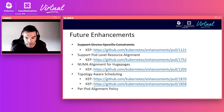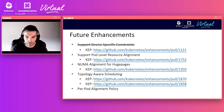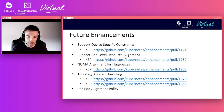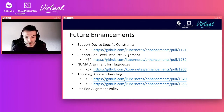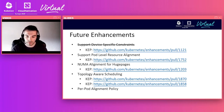NUMA alignment for huge pages: a proposed new component called the Memory Manager would provide hints and NUMA alignment for memory and huge pages, with a KEP currently under review. Topology-aware scheduling has also seen extensive discussion — should the scheduler be NUMA-aware, and should this be an in-tree or out-of-tree solution? There is ongoing work across Red Hat, Intel, Samsung, Huawei, and others, with related KEPs linked in the slides.